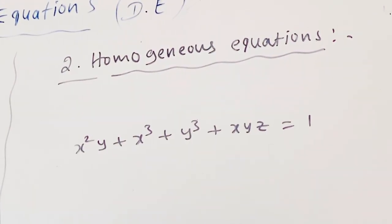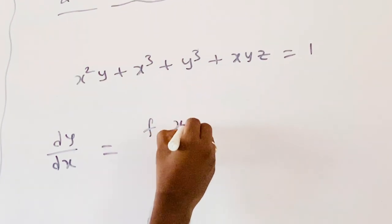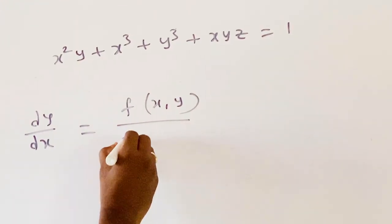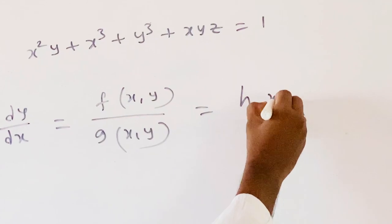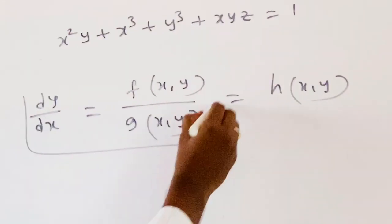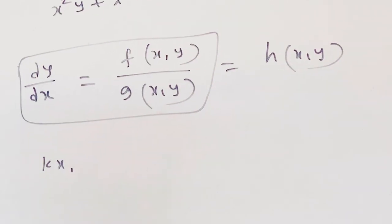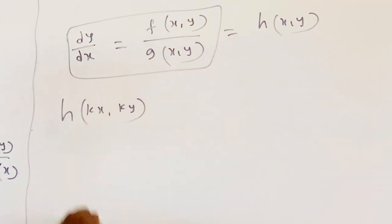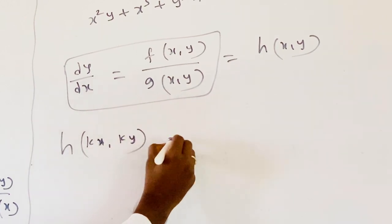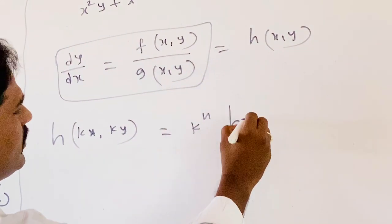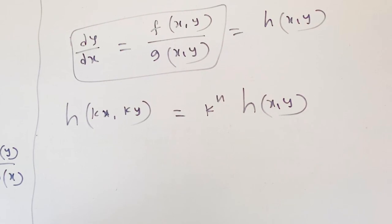The general form of a homogeneous equation is dy/dx = f(x,y)/g(x,y). We compare the total equation with h(x,y). Instead of x we write kx, and instead of y we write ky. The equation becomes h(kx, ky) = k^n · h(x,y). If this holds, the equation is said to be a homogeneous differential equation.